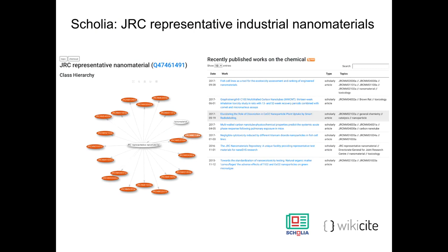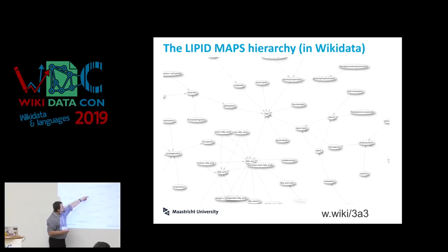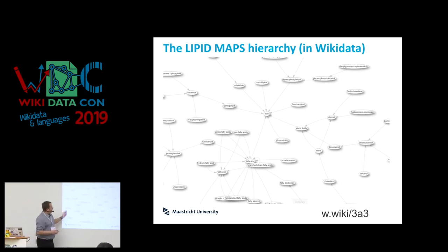Another example involves specific nanomaterials with unique codes. We've added those with the same purpose of being able to track down literature about these nanomaterials. Again, we need exact descriptions. This is the LipidMaps classification, and here we see an interesting thing that has also shown up in other presentations at this Wikidatacon — the idea that some things in Wikidata don't always match sources due to different ontological models, different ideas of what a particular thing means.